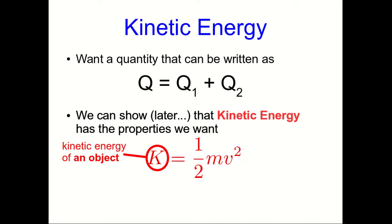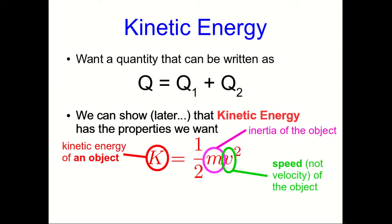And in particular, because this kinetic energy is proportional to inertia—that's the inertia of the object we're finding the kinetic energy of—we know since inertia is extensive that kinetic energy will also be extensive. And this v here is the speed, not the velocity—notice the speed of the object.